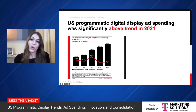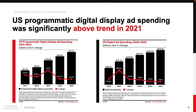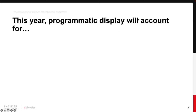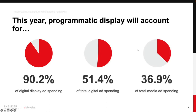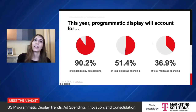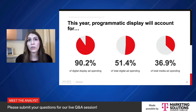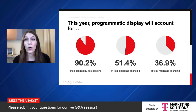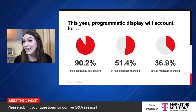Programmatic display ad spending was significantly above trend last year. This isn't surprising when you look at digital ad spending overall — that 2021 bump appears in almost every digital media ad spending forecast we have. Although growth will slow this year, advertisers will still spend a healthy $123 billion in programmatic display. That's over 90% of digital display ad spending, more than half of all digital ad spending, and almost two-fifths of total media ad spending — no small potatoes. We expect programmatic display's share of all these larger pies to continue to grow next year.